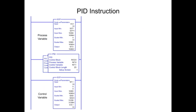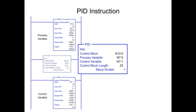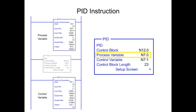In the PID instruction, the process variable parameter is programmed as an integer file, which is the scaled value from the SCP instruction. The control variable parameter is programmed as an integer, which is the memory address for the output value.